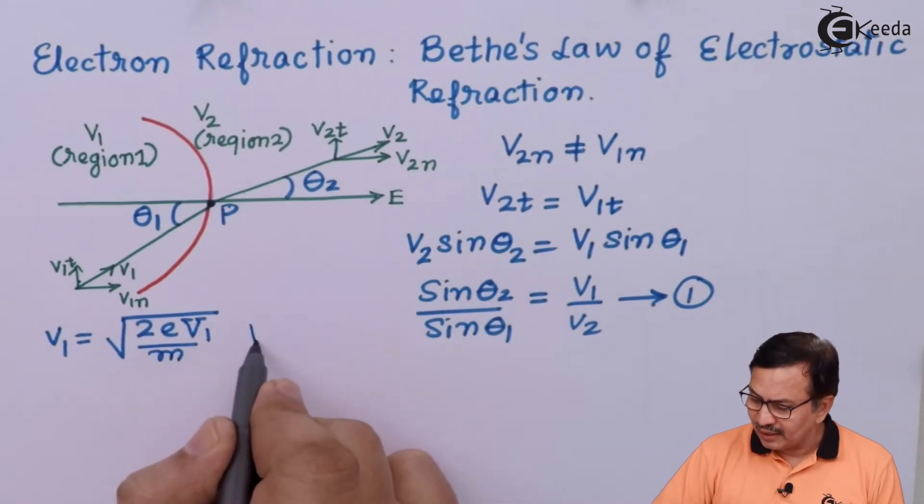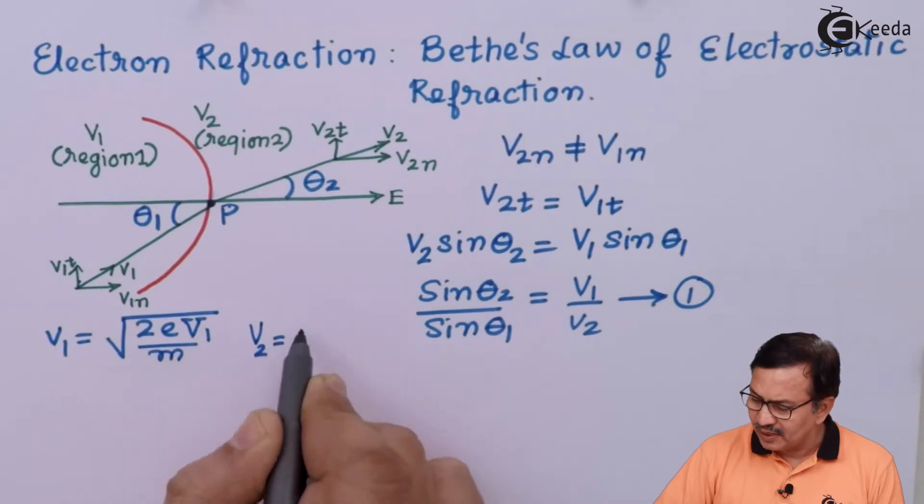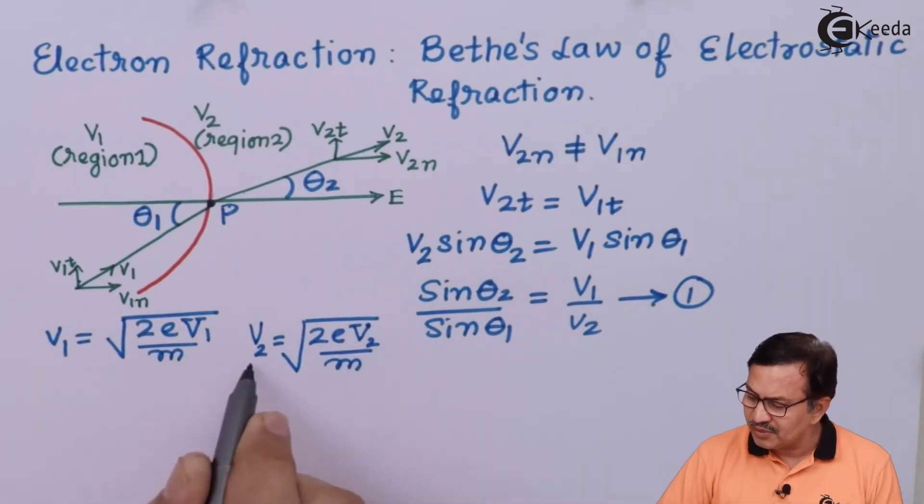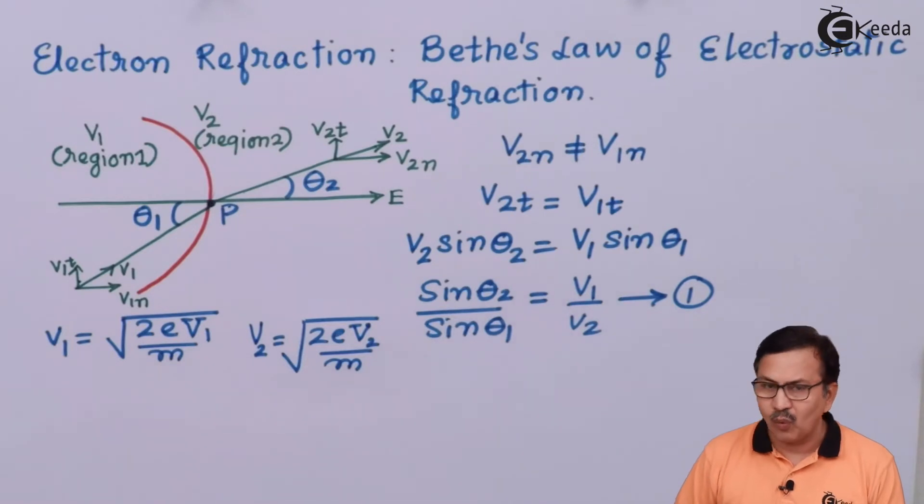Similarly, I can write down for the velocity V2 as square root of 2 into E into V2 divided by M. I make the substitutions in equation 1.